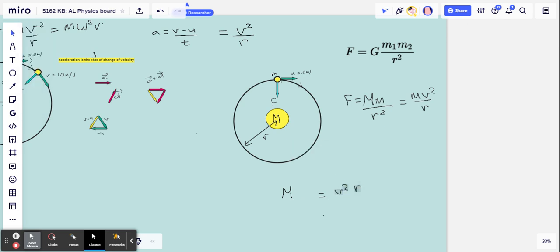Now we can see, wow, this would mean that I could use the information, if I saw something orbiting a large planet, I could calculate what the size of that planet is, because it's going to be equal to the velocity of the thing that's orbiting it squared, multiplied by its radius.